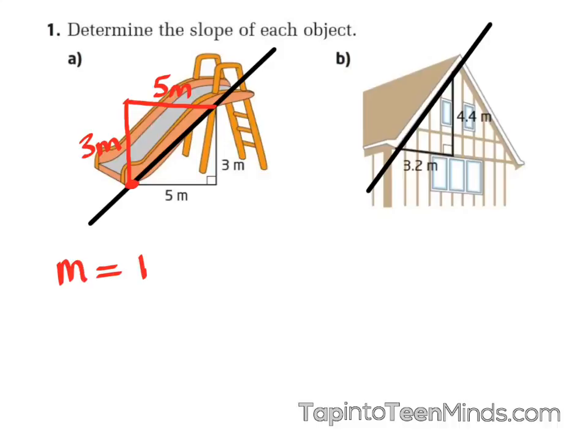When we find our slope, we always calculate our rise and divide by our run. In this case, we're looking at a rise of three meters and a run of five meters.